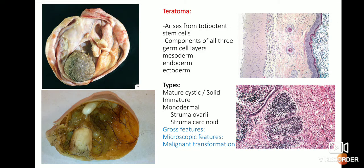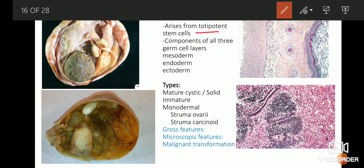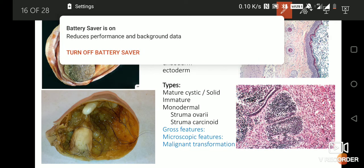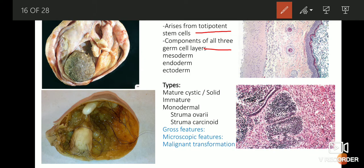Let us start our discussion with teratomas. Teratomas are tumors which arise from totipotent stem cells. The special character of these cells is that they can differentiate into all three types of germ layer — that is the mesoderm, endoderm, and the ectoderm.